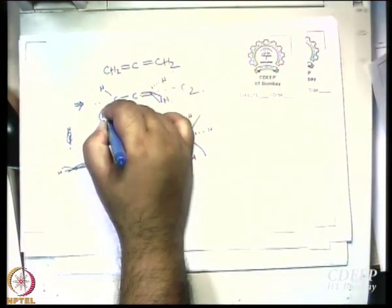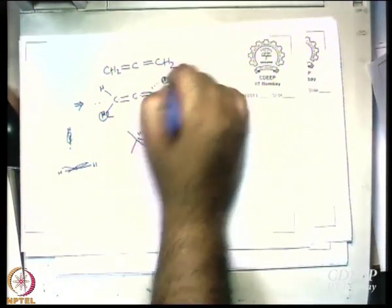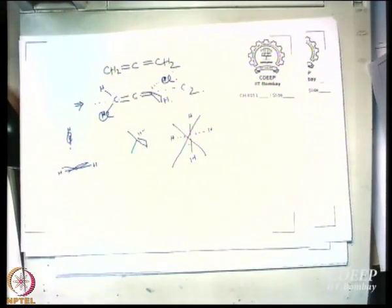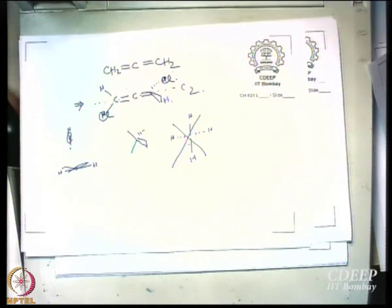Next day we are going to show you the model. Then I will ask you another question — I am not going to let go of allene so easily. Next question: now I substitute this hydrogen with a chlorine, and this hydrogen with a chlorine. Does that make it a C1 molecule? It does not — a C2 axis survives. One single C2 axis will survive even in that, and we will understand it better when we see the model.